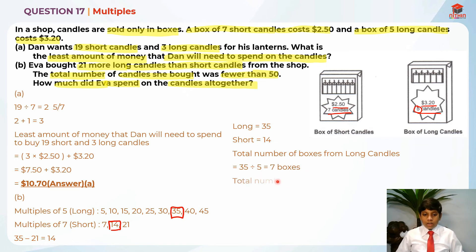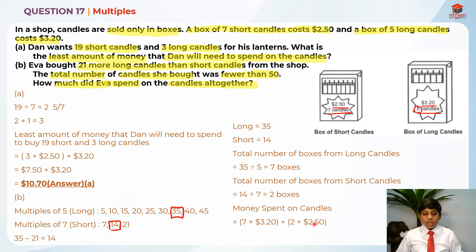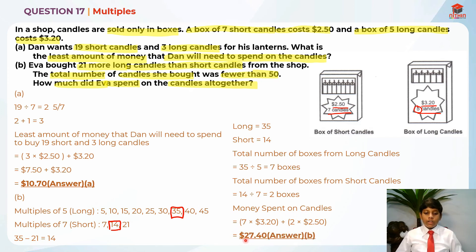The total number of boxes for short candles is 14 divided by 7, which is 2 boxes. Now we can find the total money spent: 7 long boxes times $3.20 plus 2 short boxes times $2.50. That gives us $22.40 plus $5.00, which equals $27.40. So $27.40 is the answer for Part B.